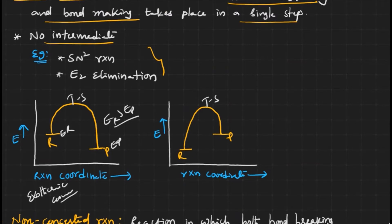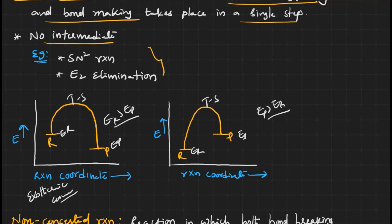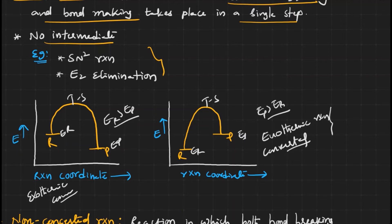Now, in this second case, this is the energy of the reactant and this is the energy of the product. The energy of the product is greater than the energy of the reactant, meaning the reaction mixture is gaining energy. If the reaction mixture requires energy, it is an endothermic reaction. This is a concerted endothermic reaction.